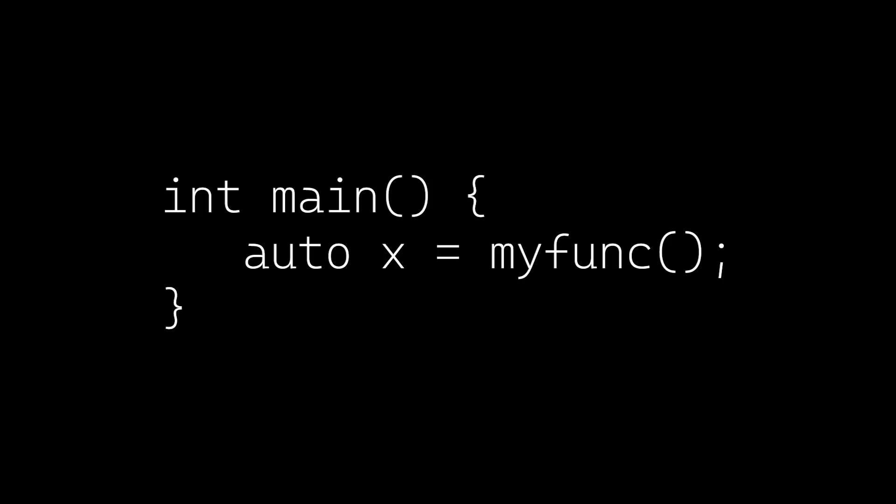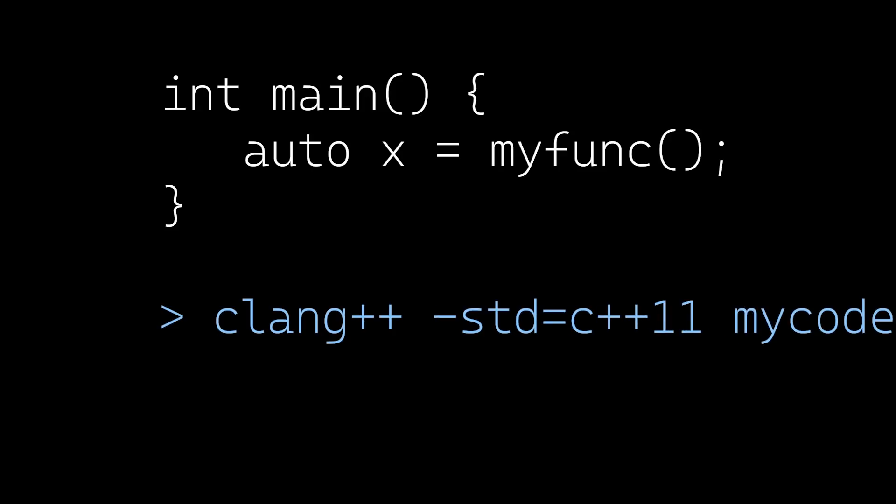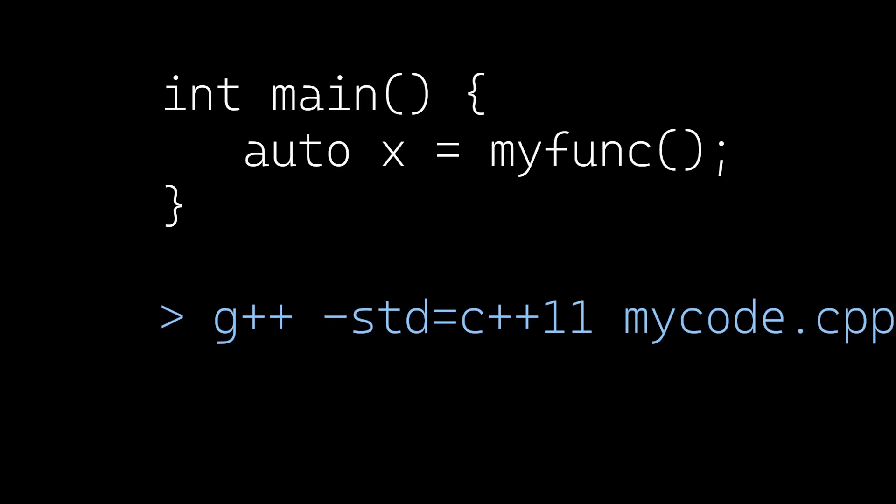But what if I want to actually use a new language feature? Maybe I want to use type inference with the auto keyword in C++. This is a feature that became available in C++11, or the 2011 version of the C++ standard. When I compile this code, my compiler might by default use a standard that will work, but if I want to guarantee that we're using C++11 I can specify the standard on the command line. Adding this flag works both for Clang and for GCC. Some faculty members will do this in their classes to ensure that their students are all working with the same language.